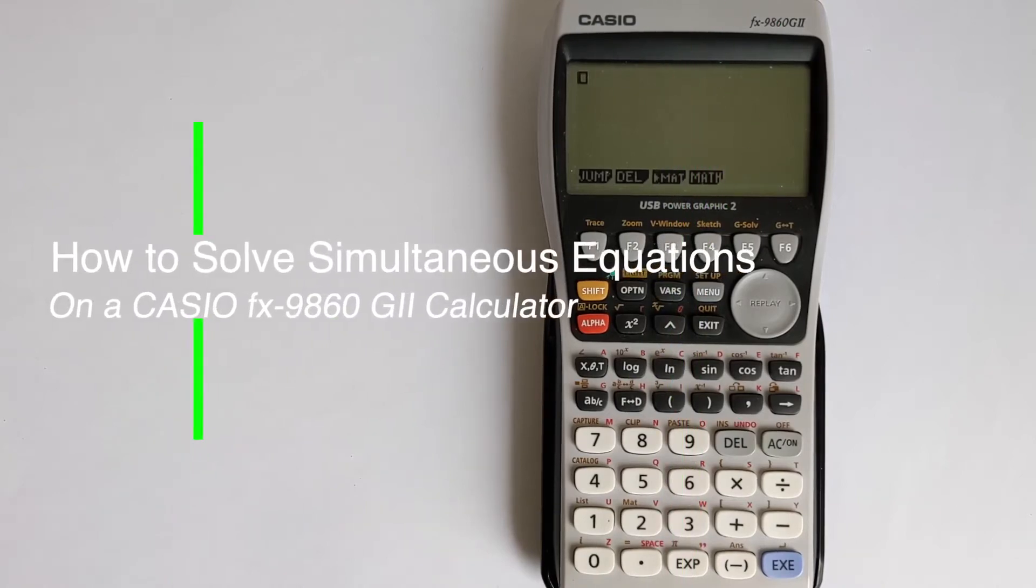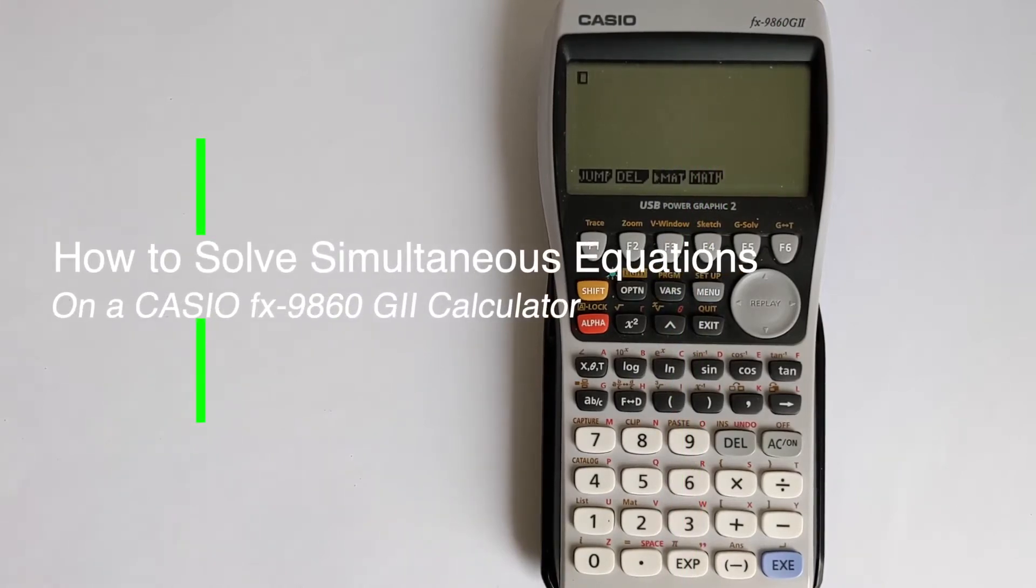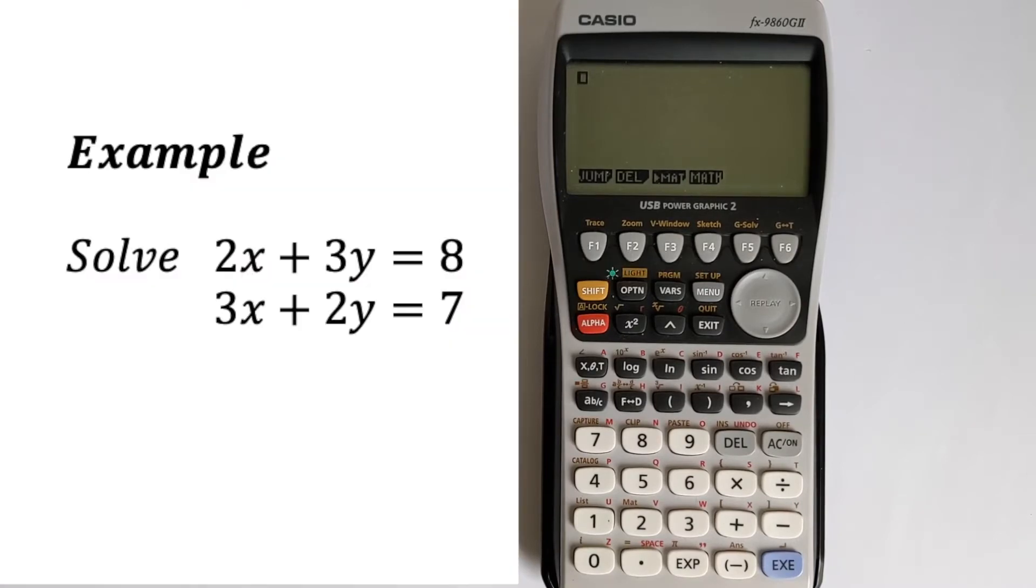In this video I'm going to show you how you can solve simultaneous equations using a Casio FX9860G2 calculator. We're going to look at a worked example. We're going to solve the equations 2x plus 3y equals 8 and 3x plus 2y equals 7.